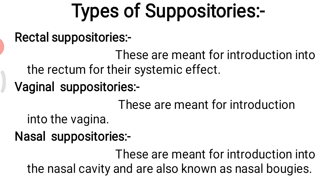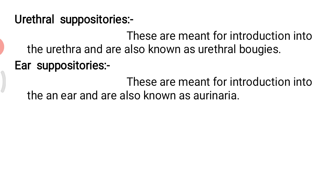Fourth, urethral suppositories. These are made for introduction into the urethra and are also known as urethral bougies. These are thin, long, and cylindrical, rounded at one end to facilitate insertion. Their weight varies from two to four grams. These suppositories are very rarely used.